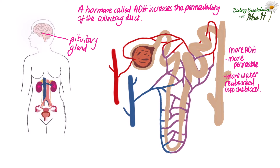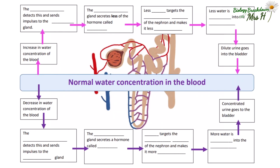ADH is secreted by the pituitary gland and is a hormone that targets the cells of the collecting ducts in the nephrons of the kidney. It is actually the hypothalamus, found above the pituitary gland, that detects the change in water concentration of the blood. The hypothalamus stimulates the pituitary gland to make or secrete more or less ADH depending on the water concentration in the blood. It is important to maintain a normal water concentration in the blood: too much and our cells would burst; too little and our cells will shrivel up.